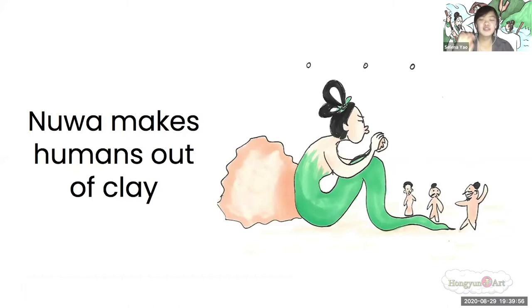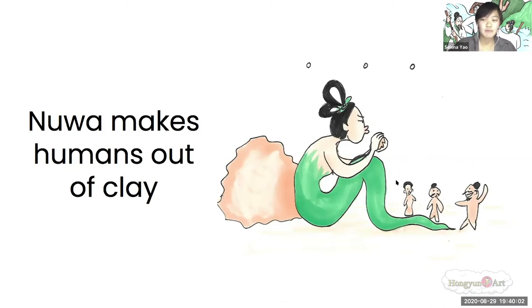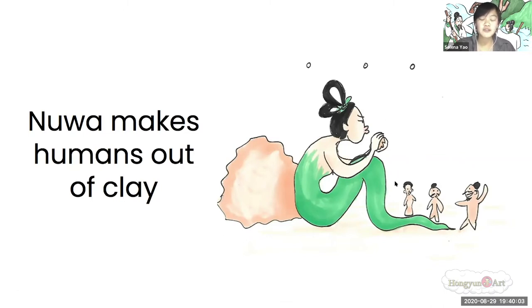But making humans out of clay takes time; it's really slow. And she's getting bored. You can see her face right here — she's not happy. She thinks this is way too slow.